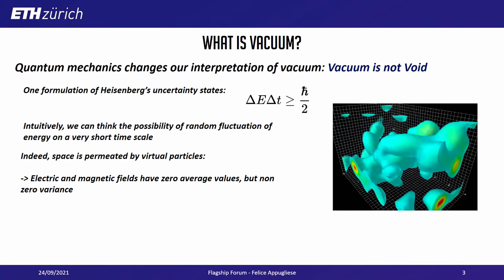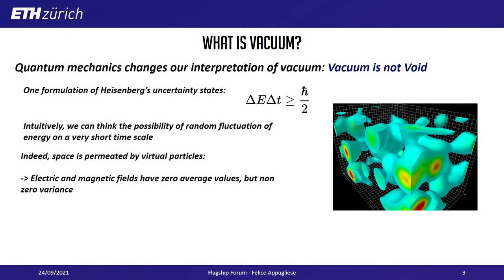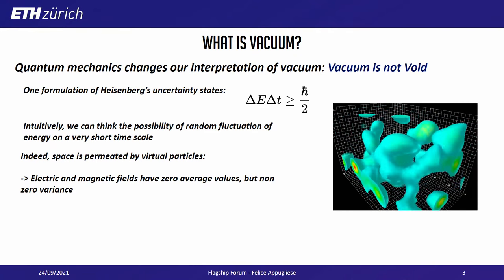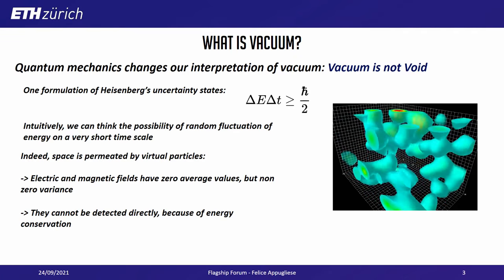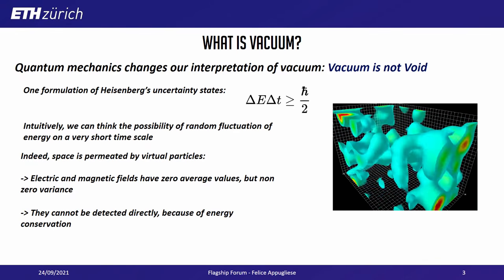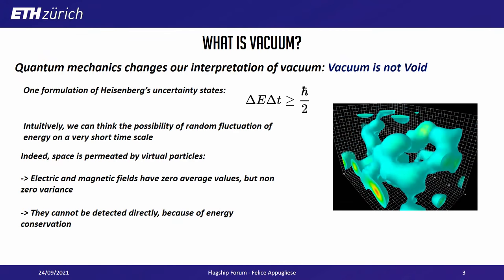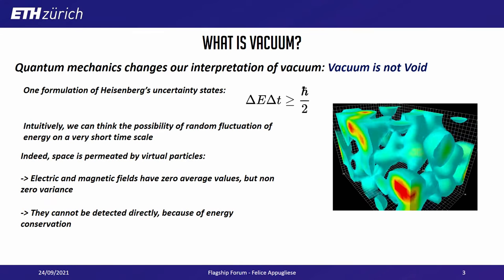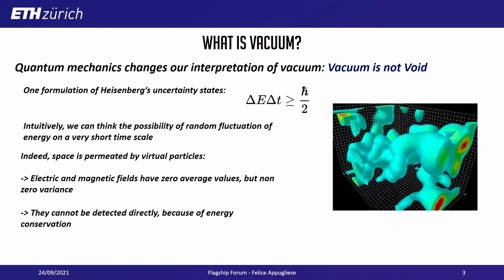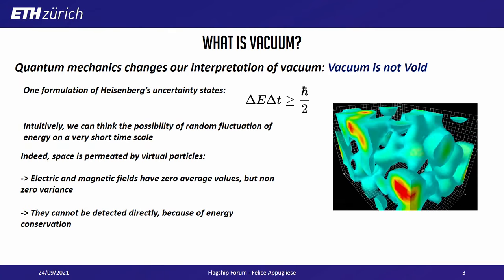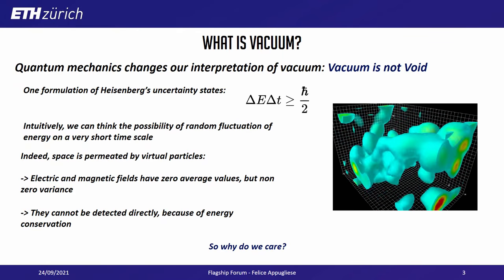Also, electric and magnetic fields have zero average values but non-zero fluctuations — non-zero variance. They cannot be detected directly since they come from nowhere, and being able to measure them would mean that we are actually violating a conservation principle of energy. So the question we can ask at this point is: if we cannot measure them, why do we care?